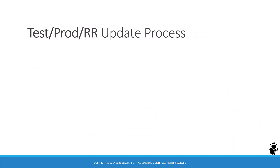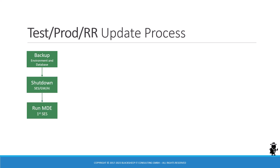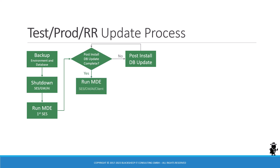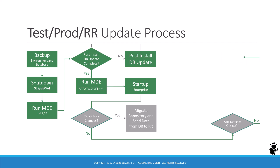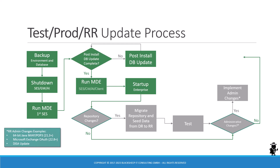Now let's look at test, production, or RR environments. You start with a backup, shut down the software, and run the Modular Deployment Engine in update mode on the first Siebel Server to get the post-install database update done. Then update any other instances of Siebel CRM in that environment, and start up the environment. If there are no repository changes and no administrative changes, you are done. The longer path is if you had repository changes — you fire up the migration application to migrate the repository, and don't forget seed data changes from development to the RR environment. Make sure you test thoroughly, implement any administrative changes depending on your implementation, and then you're done with the update of a test or production environment.